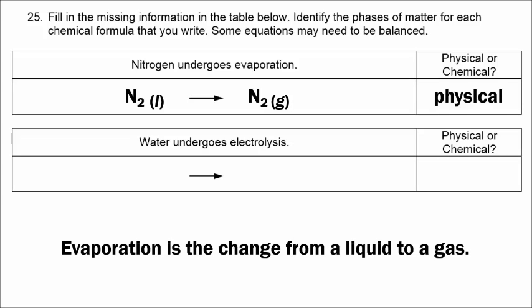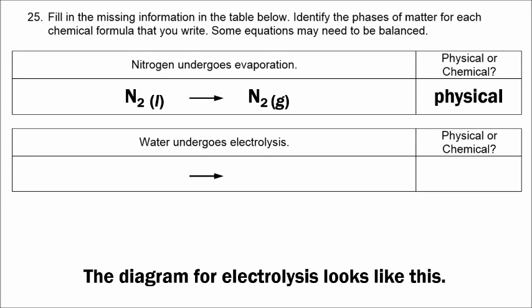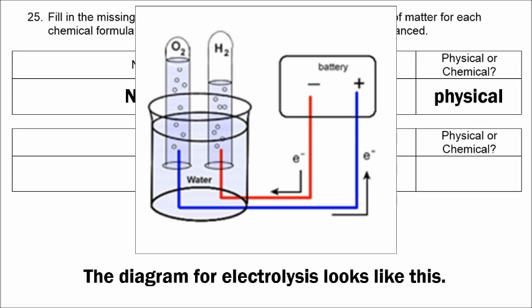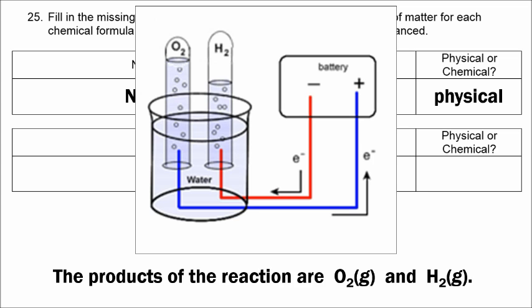In our next example, water undergoes electrolysis. The diagram from your packet shows liquid water in a beaker, and when electricity runs through that sample of water, it produces both oxygen gas and hydrogen gas. The products of the reaction are O2 and H2. Let's go ahead and write that equation.